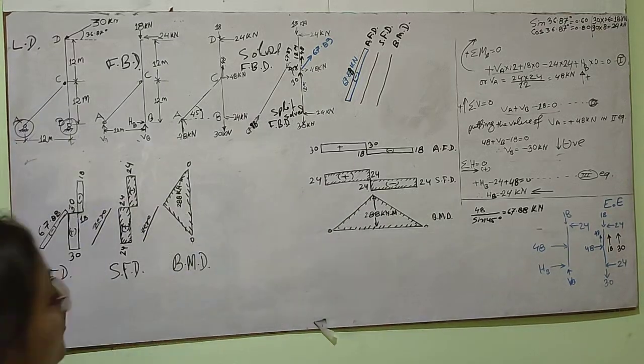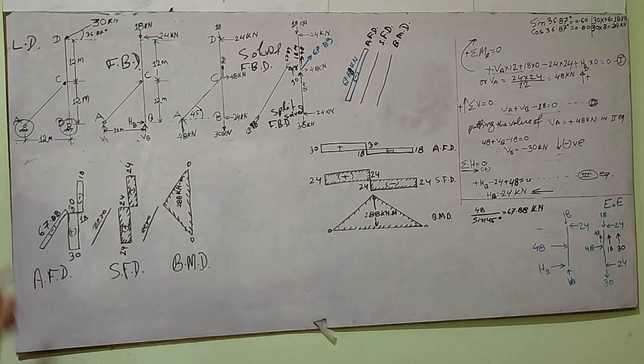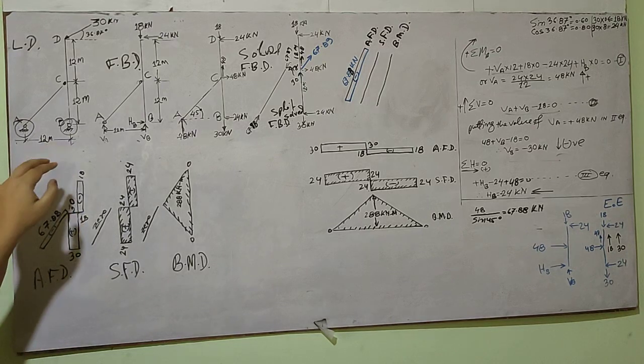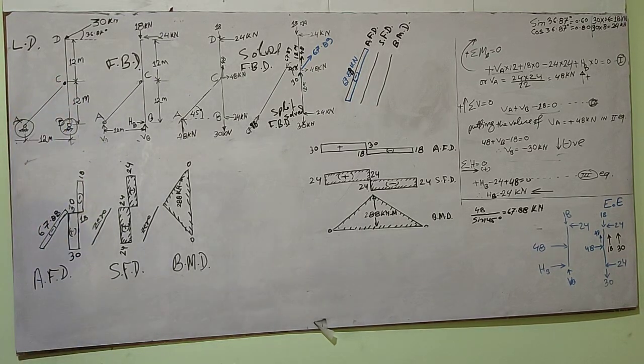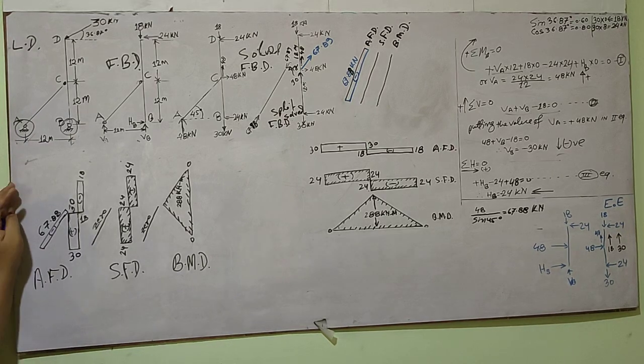Hello everyone, you can see here I'm going to solve a column with a link support. There's a hinge support and a 30 kN load is acting at an angle of 36.87 degrees. This is the loading diagram.